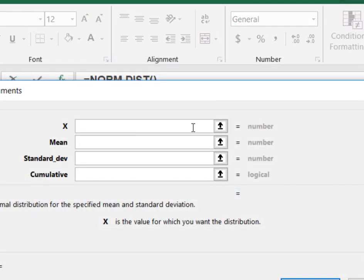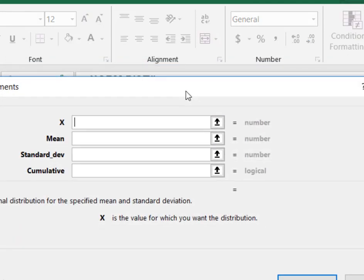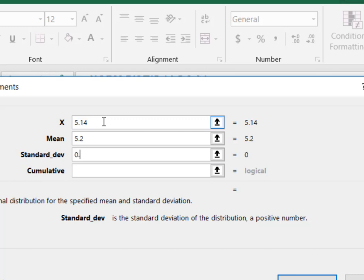I'm going to say okay, and it's going to give me a box where I can enter my function arguments. Remember I said that x was actually going to be x-bar, so that was my 5.14. I said I was going to let the mean of the sample mean be 5.2. I also said I was going to use the standard error of the mean, or the standard deviation of x-bar, to stand in for the standard deviation, and I use that as 0.01789.